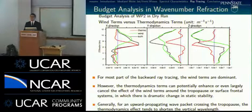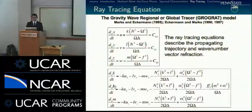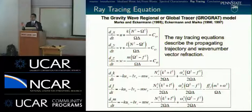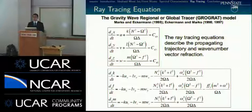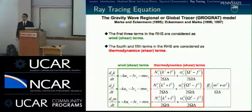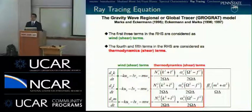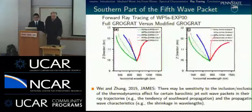Q: How long is the ray tracing integration? A: The ray tracing terminates automatically under several conditions, for example when vertical velocity becomes very small. The typical life cycle for a ray is about one day or less. For the sixth wave package, it is just several hours, depending on which wave package we are looking at.